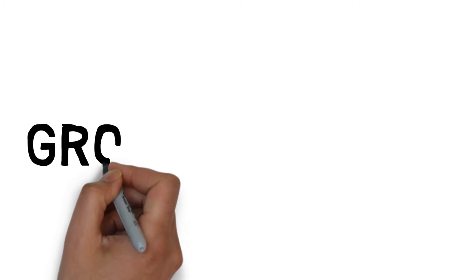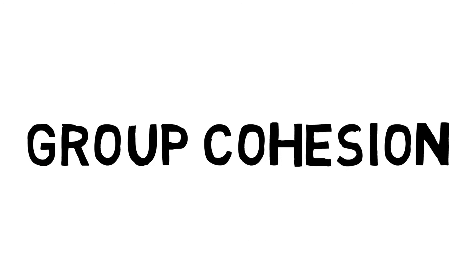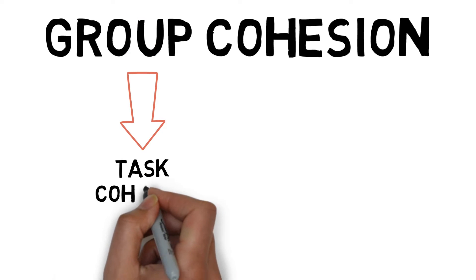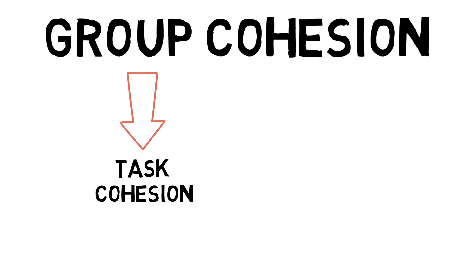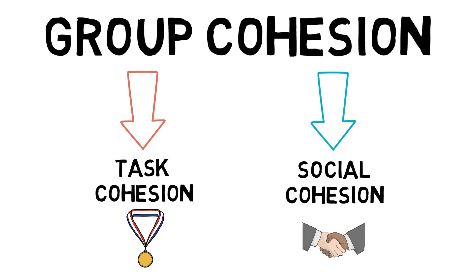Group cohesion is a dynamic process which is reflected in the tendency for a group to stick together and remain united in pursuing their goals and objectives. Task cohesion is the willingness of the team to work together to achieve their common goals, and social cohesion is the willingness of a team to interact with and socialise with each other.